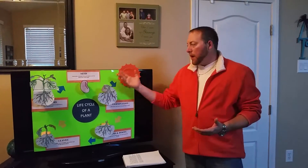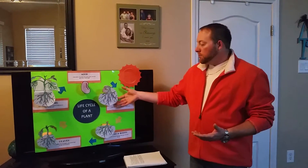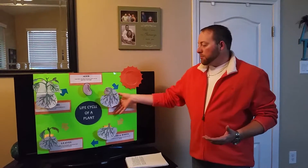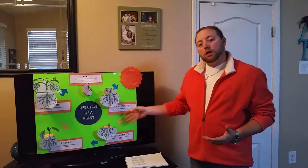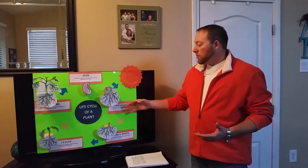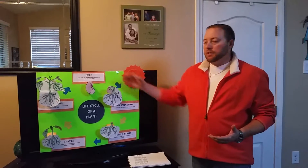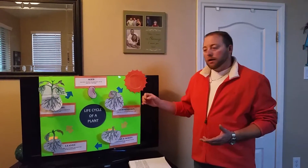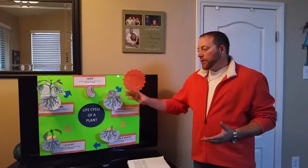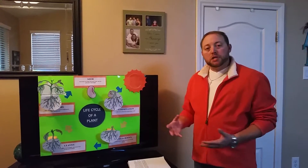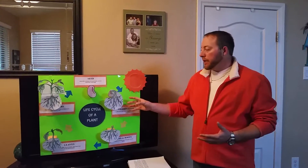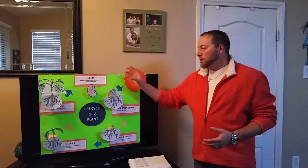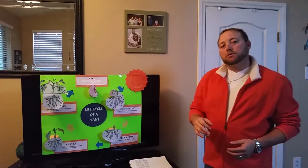Students will have the opportunity to use this board by taking the different picture blocks on and off the board, reference the different sayings for the cycle, and when they're off in a centers type of lesson they can play with the interactive blocks and put them in the order that they belong.